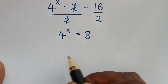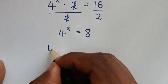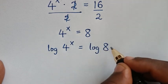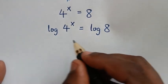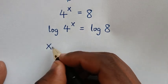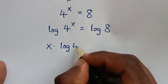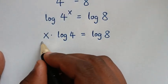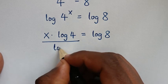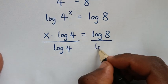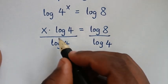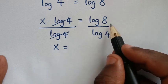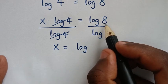In the next step, we'll apply log on both sides. So it will be log of 4 power x is equal to log of 8. Then this power x will move to the front, so it will be x times log of 4 is equal to log of 8. We'll then divide by log of 4 on both sides, so log of 4 and log of 4 will cancel, giving x is equal to log of 8 over log of 4.